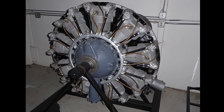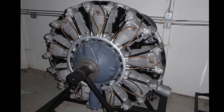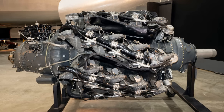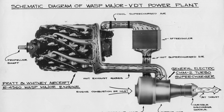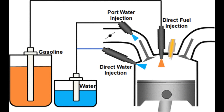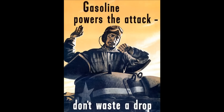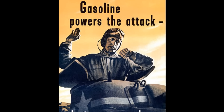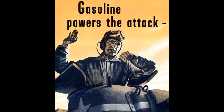So far, to get more power out of our reciprocating piston engines, we've added more cylinders, we've made them bigger, then we've used blowers of various kinds to push in more air, we've tinkered with fuel-air mixtures, and we've injected methanol and water into the mix. Today we're going to talk about fuel, and more specifically, the most important World War II aviation fuel of them all: gasoline.